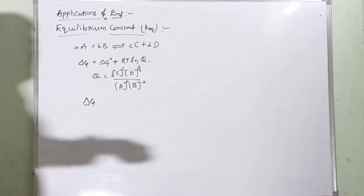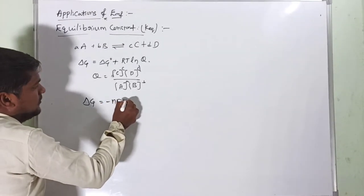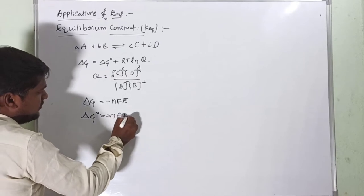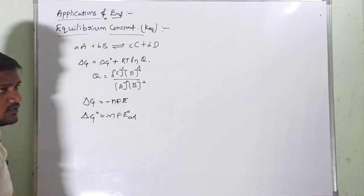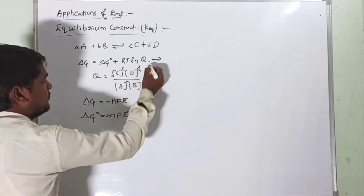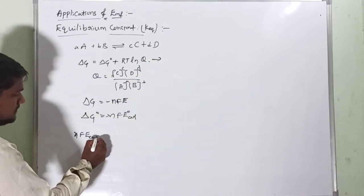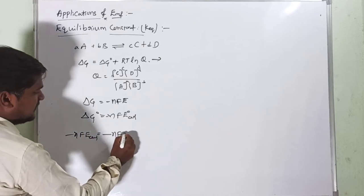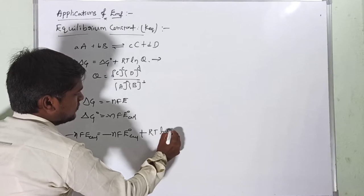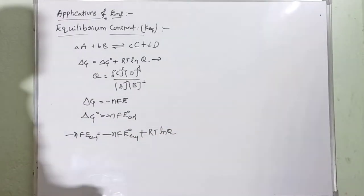We know that the work energy obtainable from the cell is ΔG = -nFE_cell. For standard conditions, ΔG° = -nFE°_cell. Substituting both values into the first equation, we get: -nFE_cell = -nFE°_cell + RT·ln(Q).